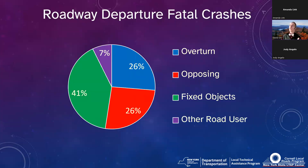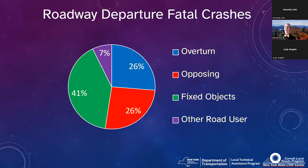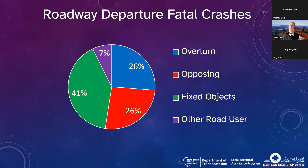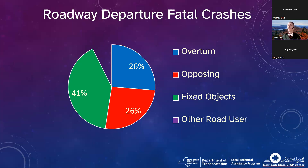Roadway departure fatal crashes break down into three big groups: fixed objects (nearly half), overturning (someone goes off and rolls — often because they're not wearing a seatbelt), and opposing-direction crashes (head-ons, which we can address with centerline rumble strips or slightly wider lanes, or on interstates by separating directions). For overturning, one of the worst things you can do is not wear a seatbelt in a rolling car.